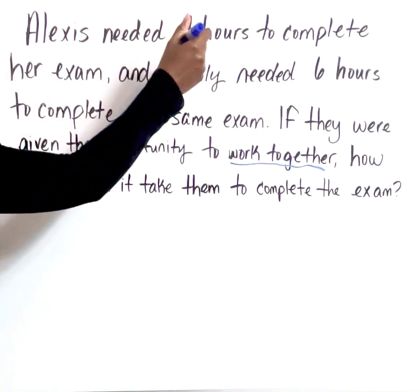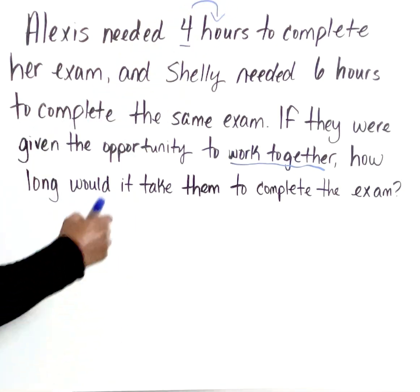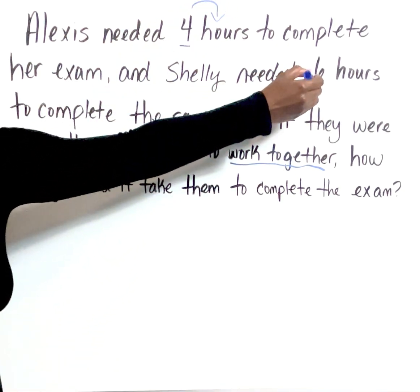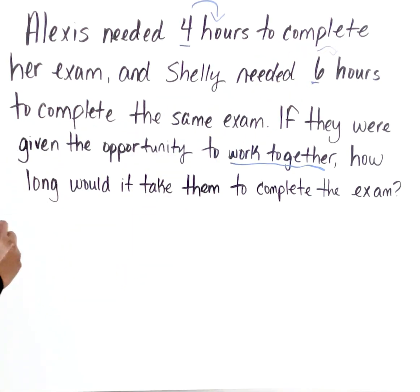Looking at the values we have: it says Alexis needed four hours - that's time based - and Shelly needed six hours. That tells me the different times I'm dealing with.